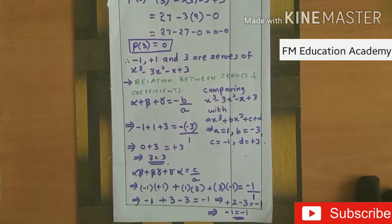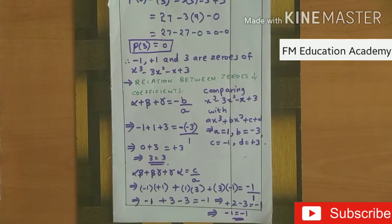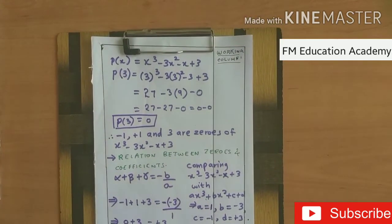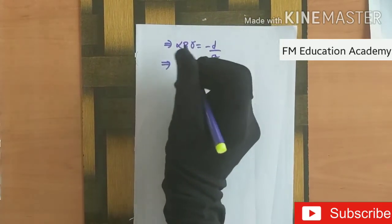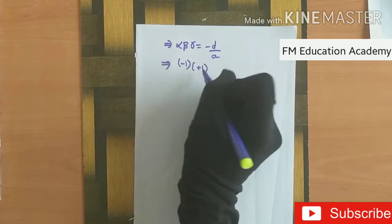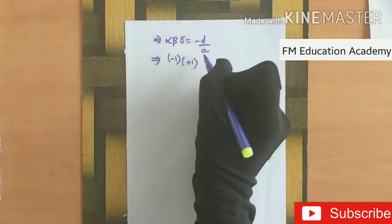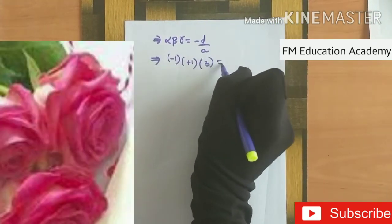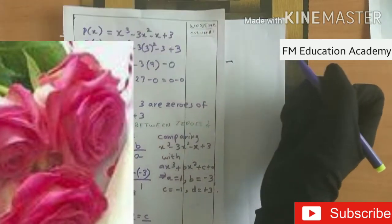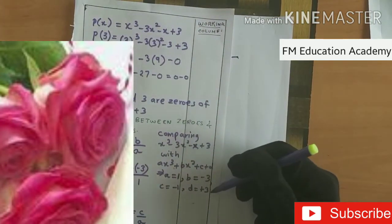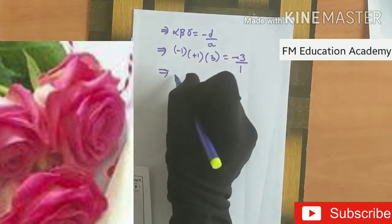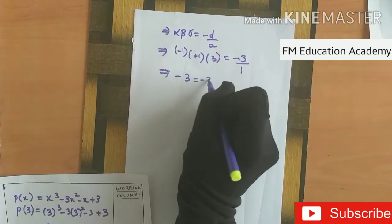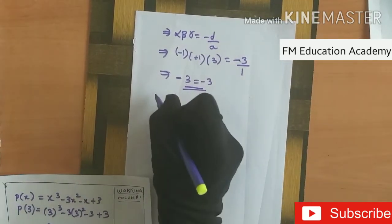Now the product of zeros: alpha times beta times gamma equals minus d by a. Substituting: (minus 1) times (plus 1) times 3 equals minus d by a. That is minus 1 times 1 is minus 1, and minus 1 times 3 is minus 3. On the right side, minus d by a equals minus 3 by 1 equals minus 3. So minus 3 equals minus 3; LHS equals RHS.